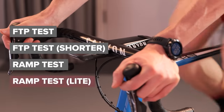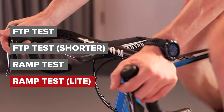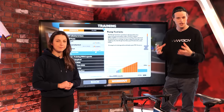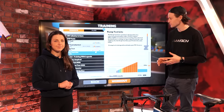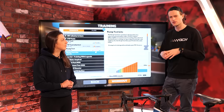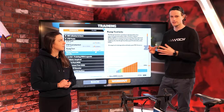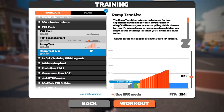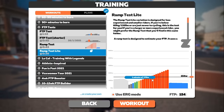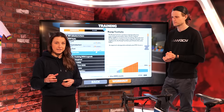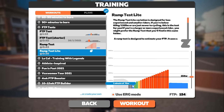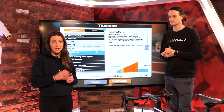Last up, you have the ramp test light. This is the same as the ramp test, but it's tailored towards lighter riders — those under 60 kilograms — and also those who are newer to cycling who may need a gentler introduction to the testing protocol. The ramp test light increases more gradually: every one minute it increases by 10 watts, whereas the ramp test increases by 20. The ramp test light also starts at 50 watts, whereas the ramp test starts at 100 watts.